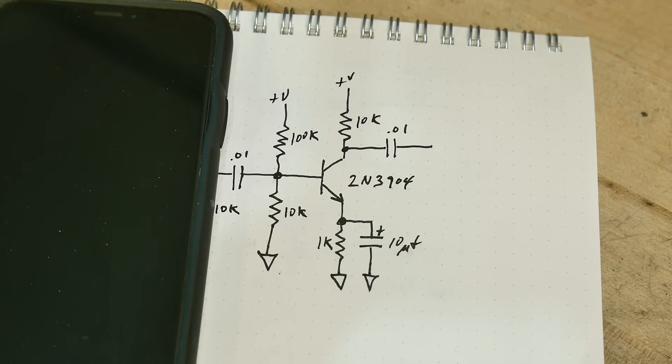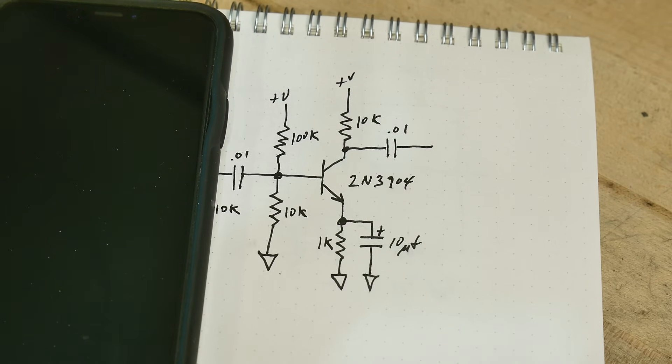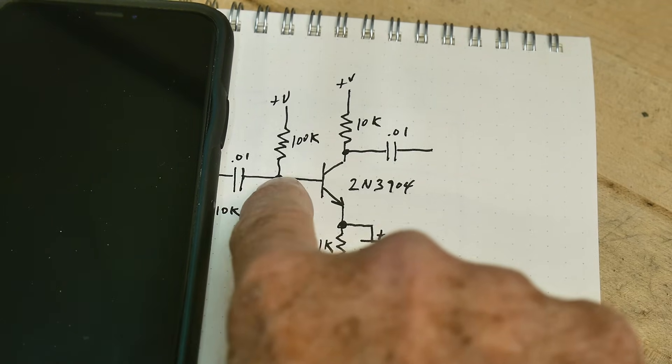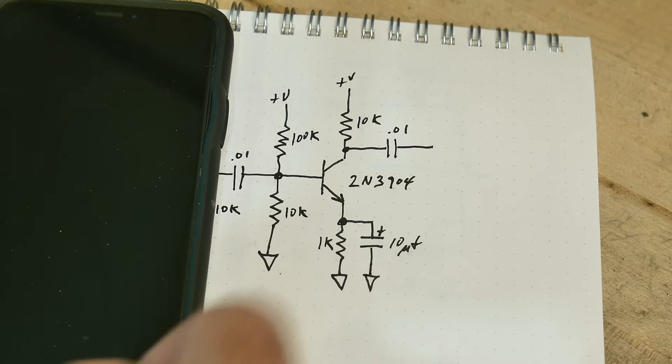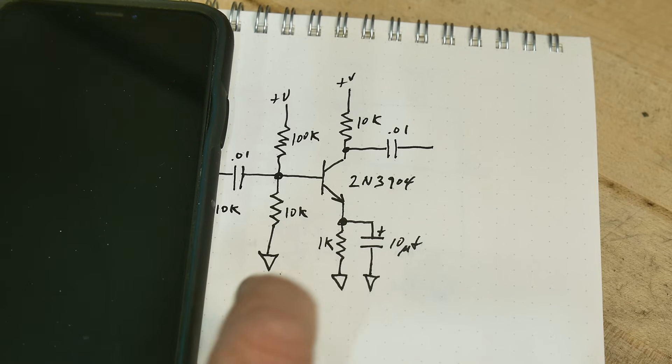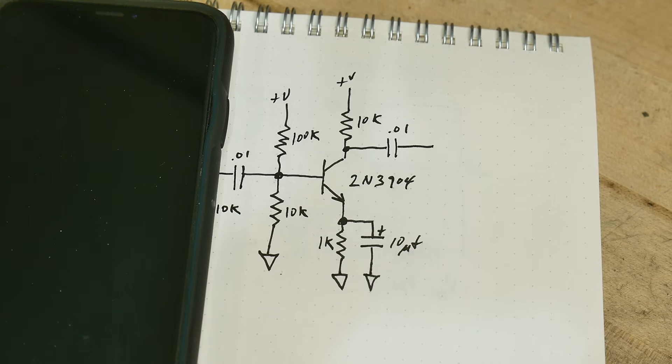All right, what is on the bench today? We have a circuit. This should look familiar. This is a common emitter amplifier with capacitively coupled input and capacitively coupled output. We've got some gain. And what I want to do is I want to turn this into an oscillator.